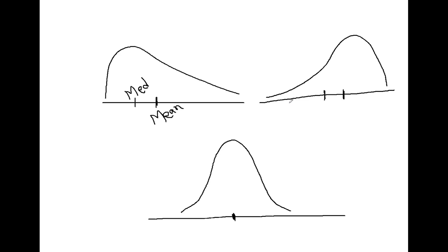So if our distribution is normal or nearly normal, we can use either mean or median. But if our distribution is skewed, or if we suspect that our data contains some extreme values or outliers, it is better to use median as a measure of central tendency.